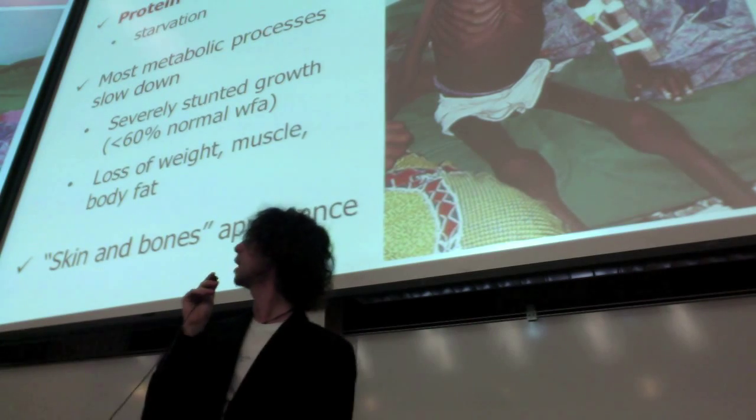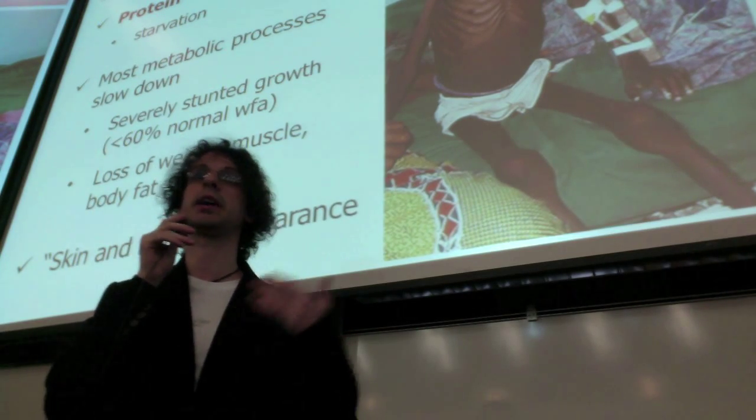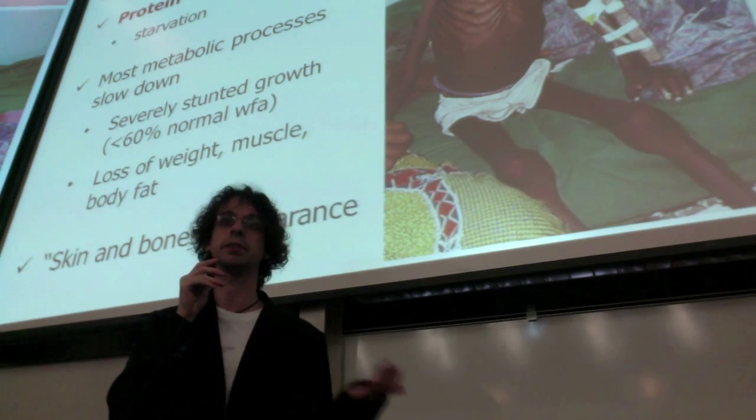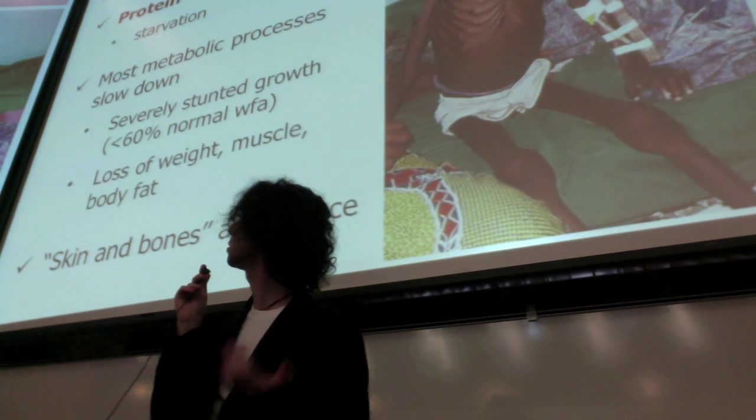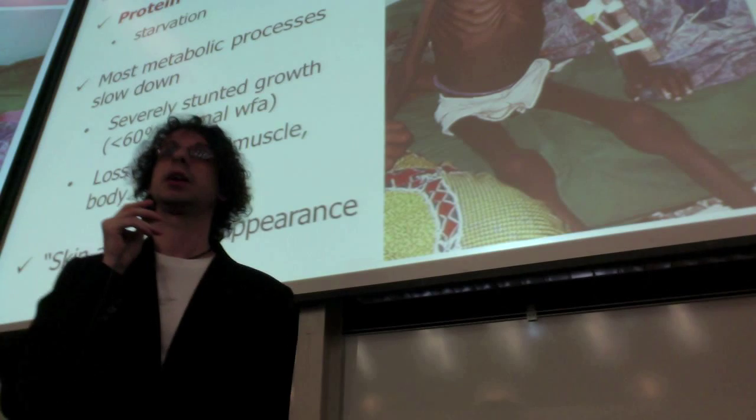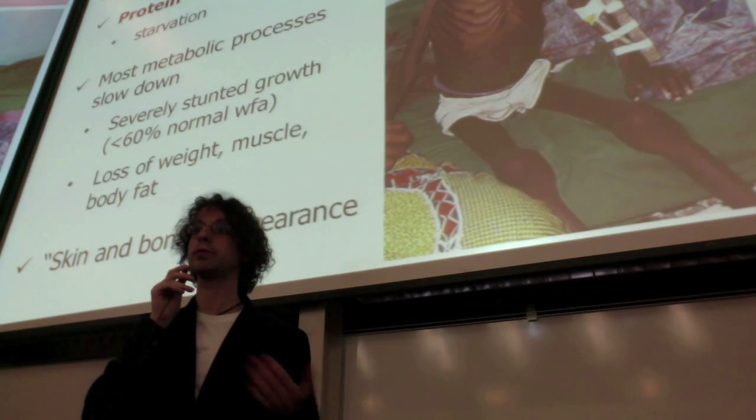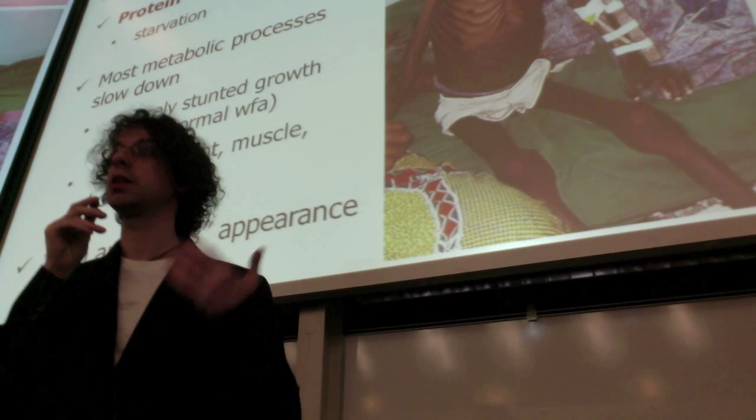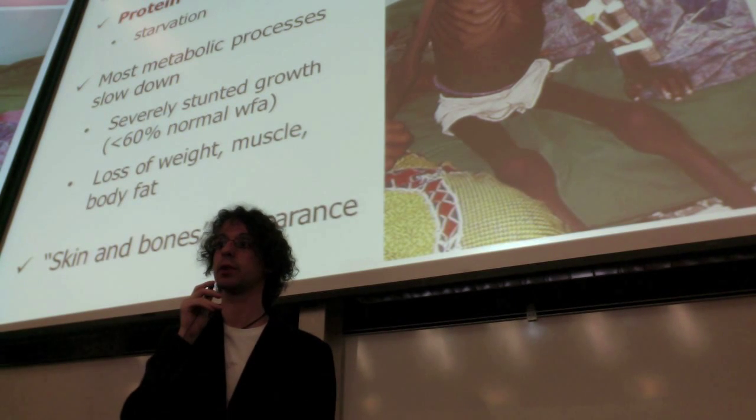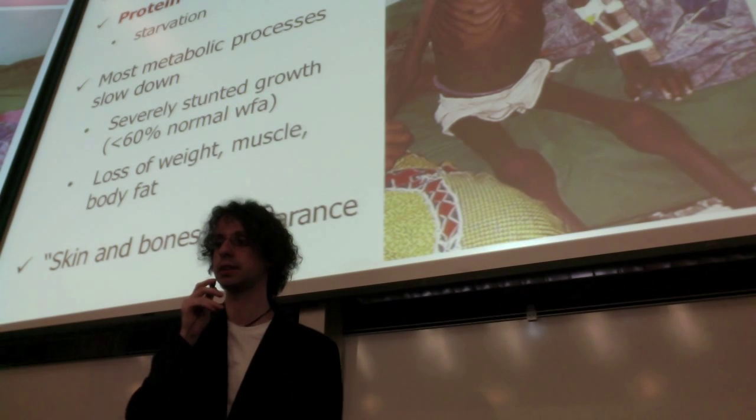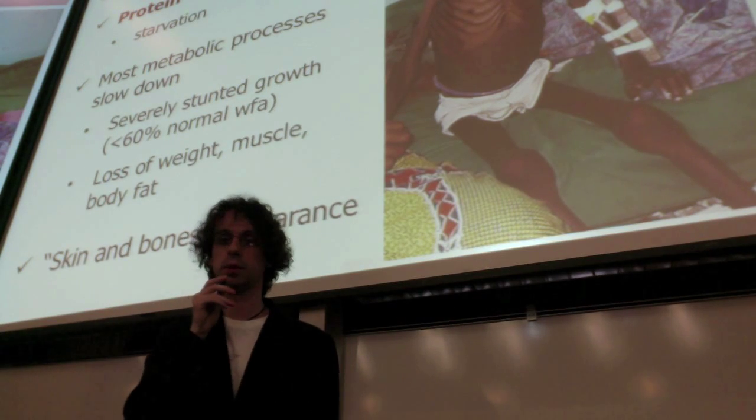So marasmus is now we have a full protein and energy deficiency. So here you're not only getting not enough proteins, but also not enough carbs, not enough lipids, not enough anything. You are just not eating enough, you are starving. And so this is a complete wasting of body tissues, most metabolic processes will slow down. Growth will be severely stunted, less than 60% of the normal weight for age. It will start losing weight, muscle, fat, bones, so general wasting of body tissues. Severely higher risk for infection and disease and death resulting from this disease. And basically all that's left is skin and bones, so no muscle, no fat tissue.